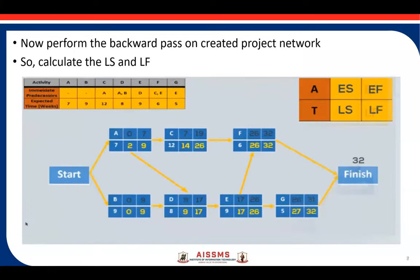Now we carry out the backward pass on the project network to calculate LS — latest start — and LF — latest finish. In the backward pass, we start with the last node, moving from right to left. We take 32 as the latest finish for the last activities F and G. We subtract the duration — for example, 32 minus 6 equals 26 as the latest start. In this way, we calculate late start and late finish for every activity in the network diagram.